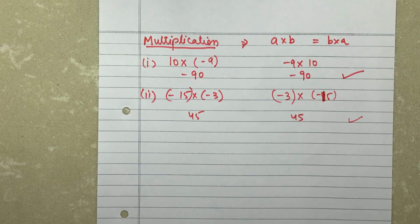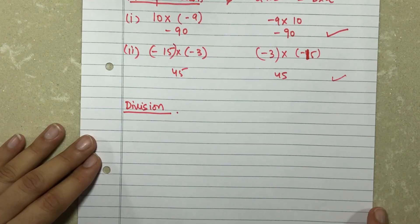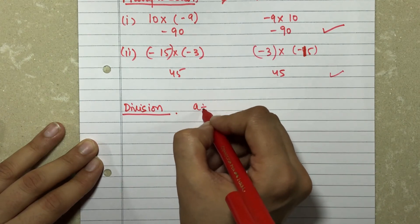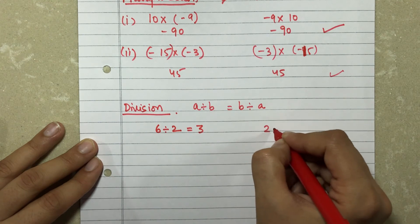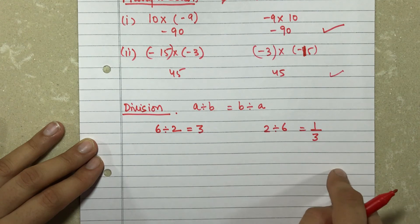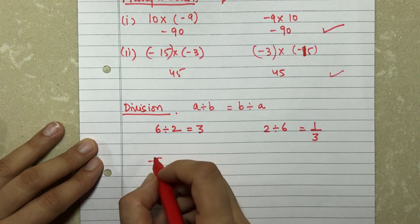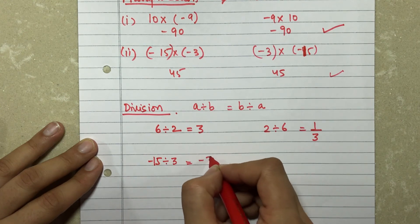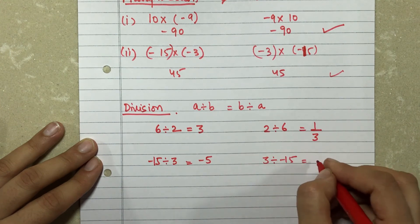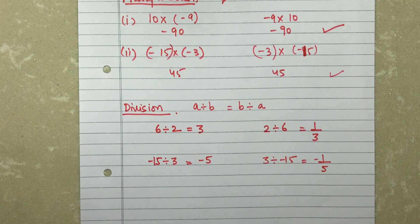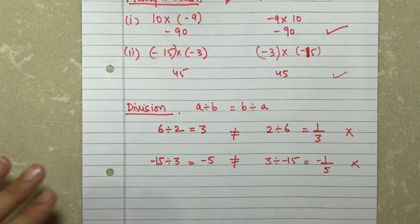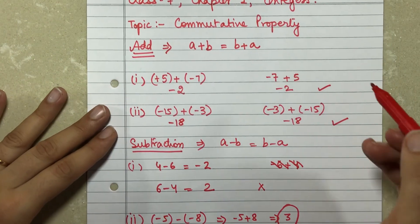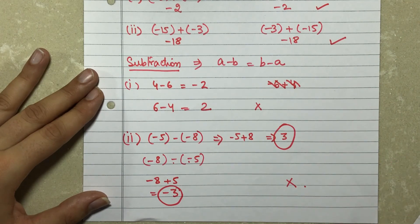For division, the property says a divided by b should equal b divided by a. Let's check: 6 divided by 2 gives 3, but 2 divided by 6 gives 1 by 3 — clearly not matching. Another example: minus 15 divided by 3 gives minus 5, but 3 divided by minus 15 gives minus 1 by 5. These are not matching, so the commutative property does not stand true for division.